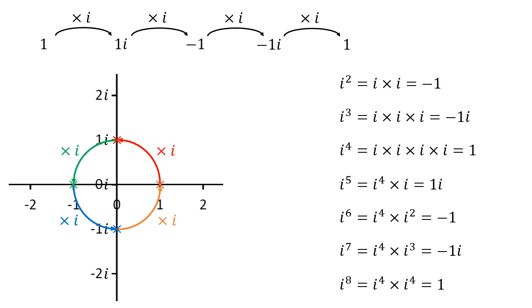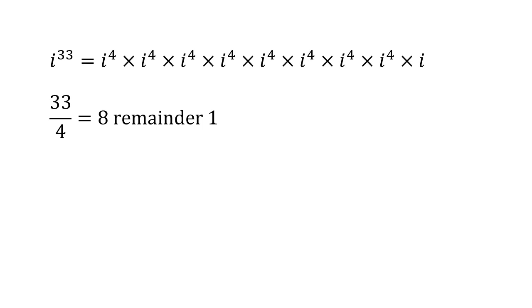We're going to take a look at some examples for higher order numbers. Let's take the example of i to the power of thirty-three. Thirty-three divided by four is eight remainder one. So we have i to the four eight times and then we just multiply by i once. That gives us one i because i to the four is just one, so all of these are just one multiplied together and then we multiply by i.